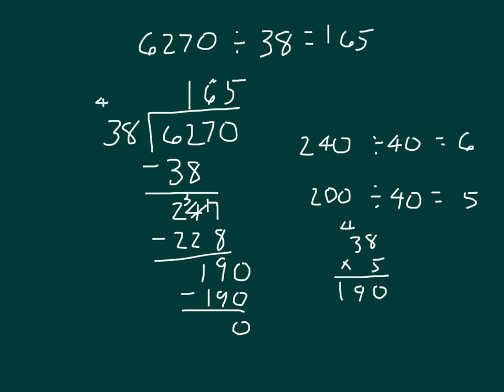To check my work, I would multiply the divisor, 38, by 165. But instead of setting it up like this, 38 times 165, it's much easier for me to write out 165 times 38. That way I'm multiplying by two digits there. 8 times 5 is 40, regroup the 4. 8 times 6 is 48, plus 4 is 52, regroup the 5. And 8 times 1 is 8, plus 5 is 13. That's 1,320.